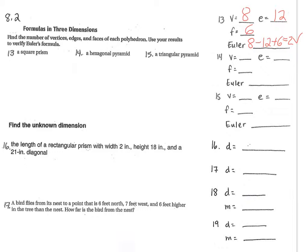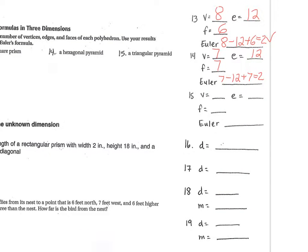For number 14, what was the answer? The answer is vertices 7, edges 12, faces 7. And here you're going to have 7 minus 12 plus 7, that equals 2, and that is correct. It makes sense, so it is a polyhedron.